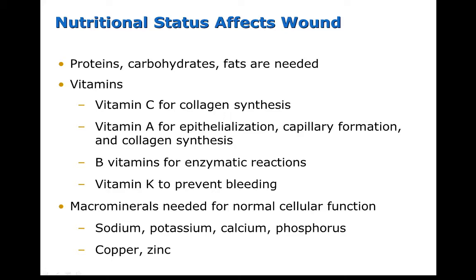Adequate nutrition is important for successful wound healing. Vitamin C is needed for collagen synthesis. Vitamin A is needed for new skin growth, capillary formation, and collagen synthesis. The B vitamins are important for enzymatic reactions, and vitamin K helps to manage bleeding. The macrominerals — including sodium, potassium, calcium, phosphorus, copper, and zinc — are all important for wound healing because they're important in normal cell function.